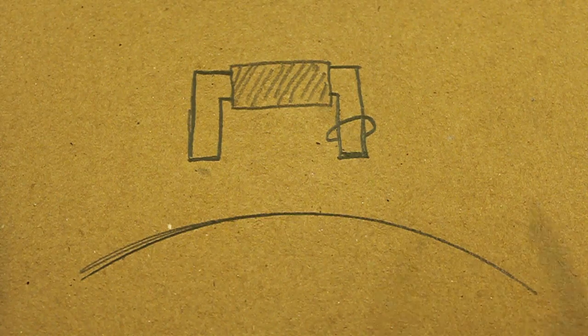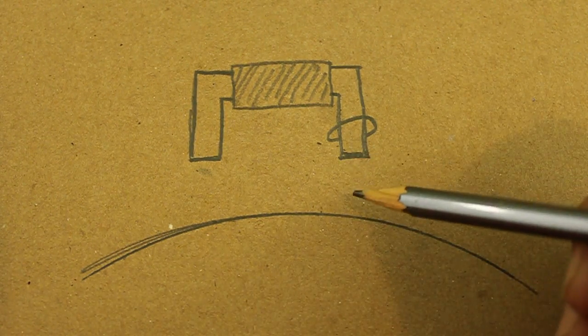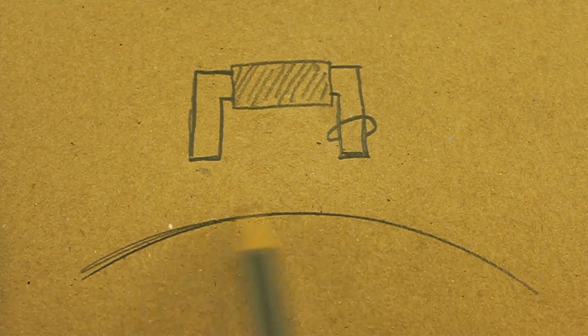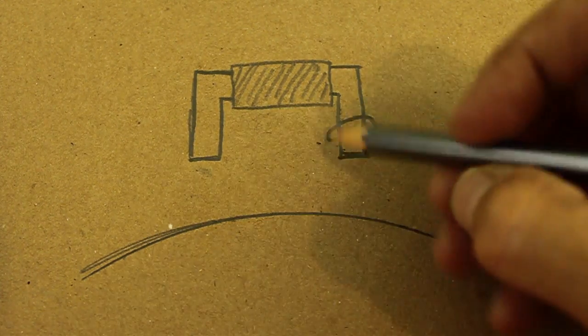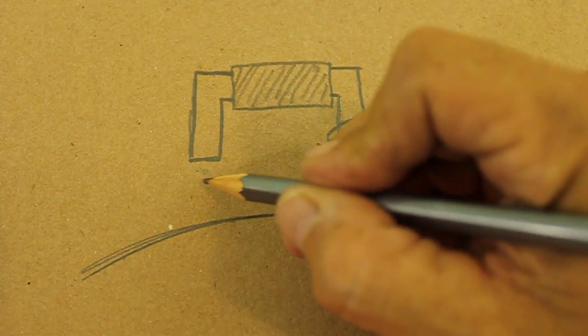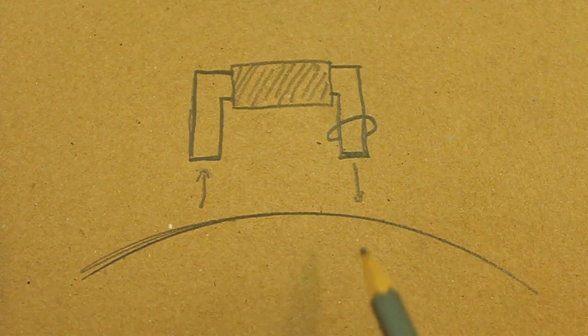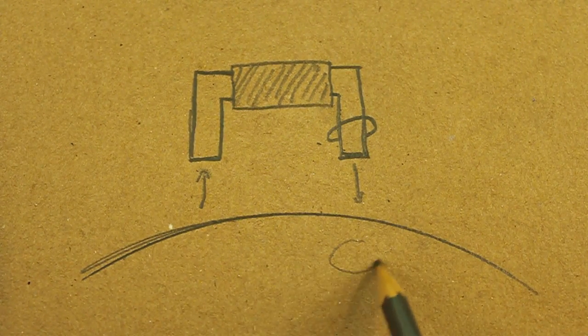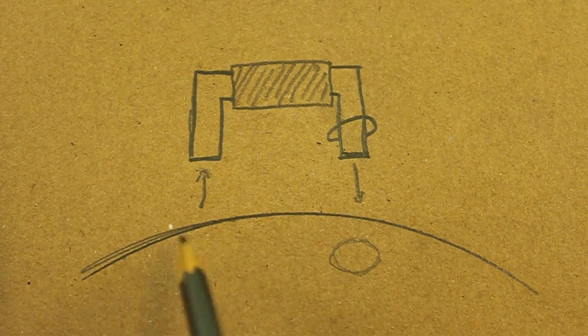A varying magnetic field induces a current in a conductor. The rotor is made of a conducting material. Therefore, the field from this pole and the field in the other pole will induce currents in the rotor.